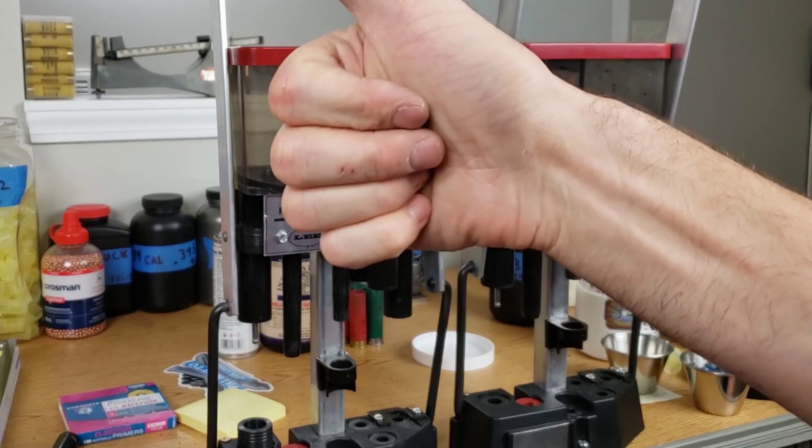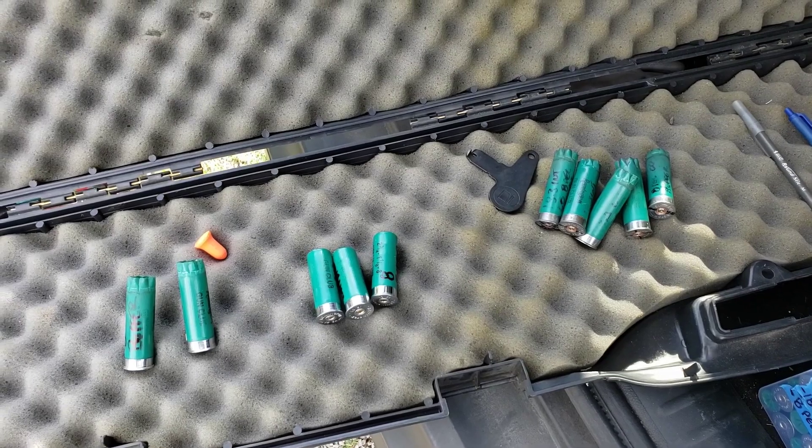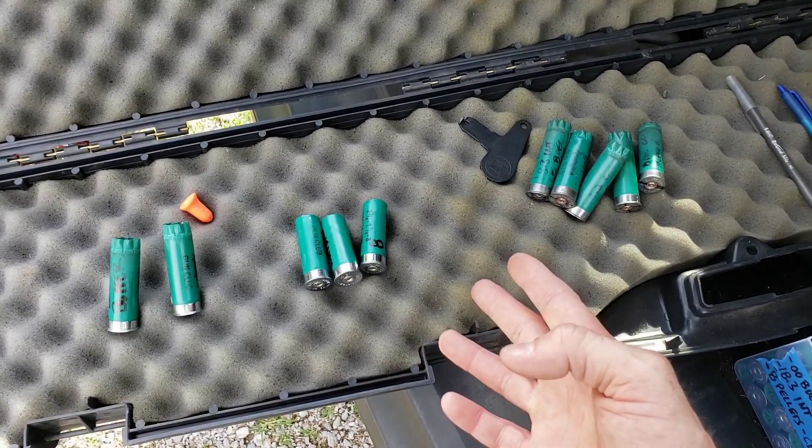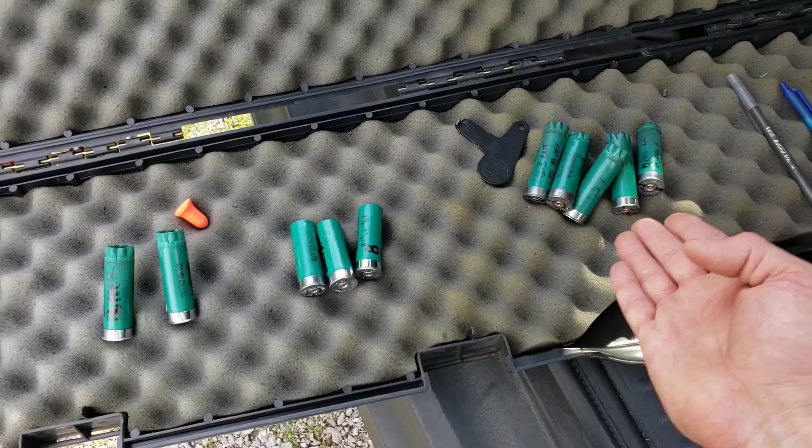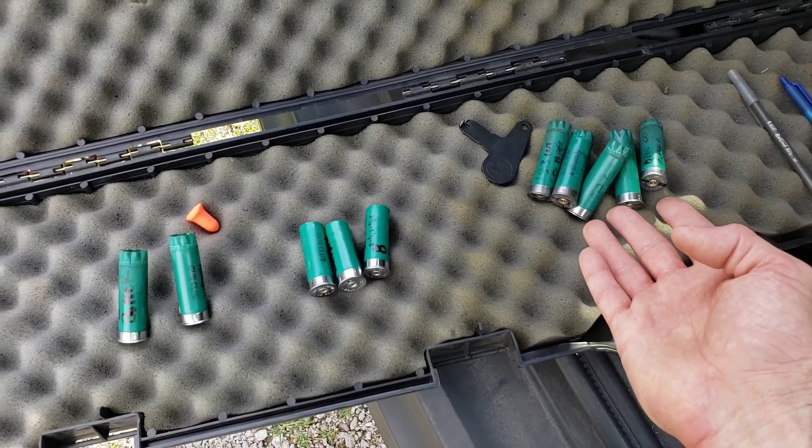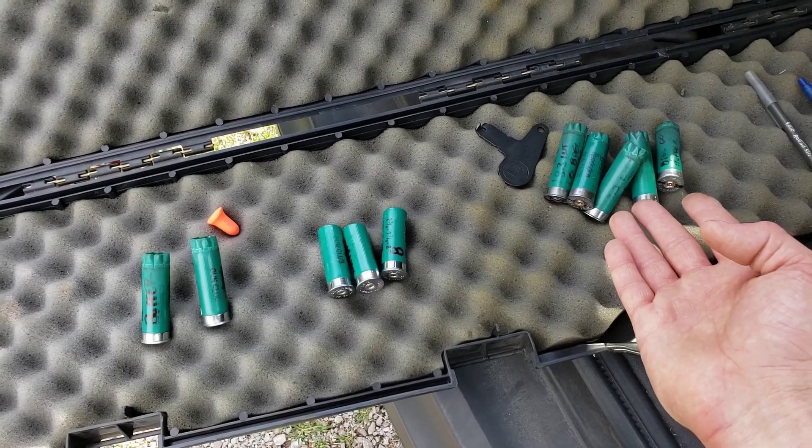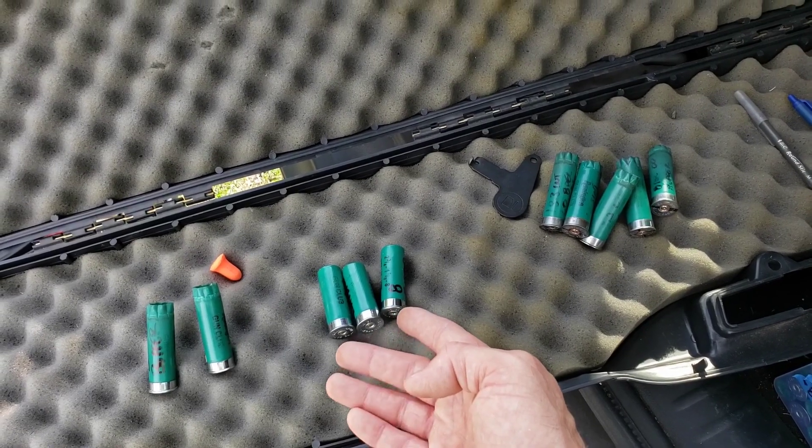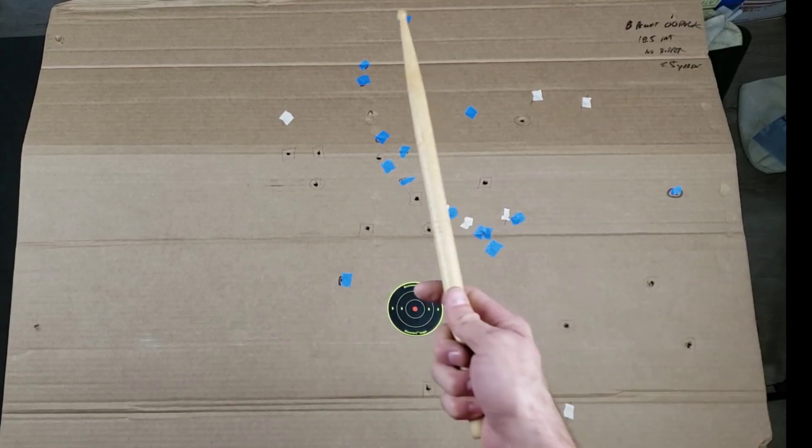Well, we made it out here after work to the range real quick. We're testing an eight-pellet load with International, no buffer versus with buffer. I've already shot those - it wasn't as good as I remember, but I'm actually liking these a whole lot over here. Let's take these other shots and I'll show you what we've got.